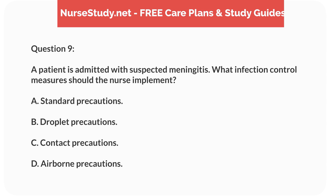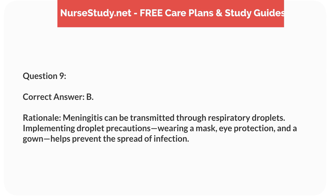Question 9. A patient is admitted with suspected meningitis. What infection control measures should the nurse implement? A. Standard precautions. B. Droplet precautions. C. Contact precautions. D. Airborne precautions. Correct answer: B. Rationale: meningitis can be transmitted through respiratory droplets. Implementing droplet precautions — wearing a mask, eye protection, and a gown — helps prevent the spread of infection.